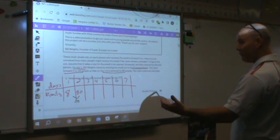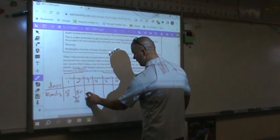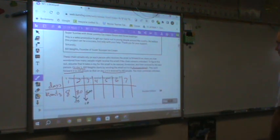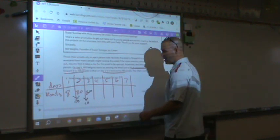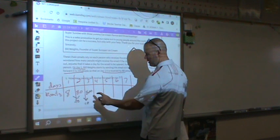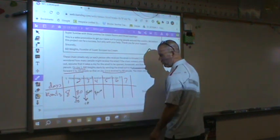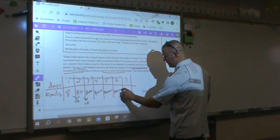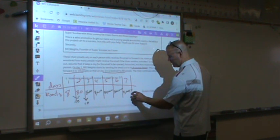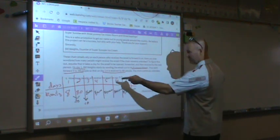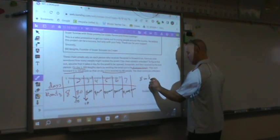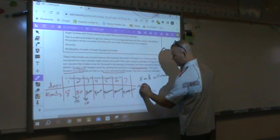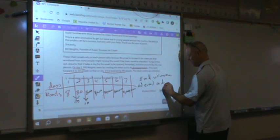So those 80 people are going to send it to 10 of their friends, which is another 800 people. Eight to 80 to 800 to 8,000 on day four to 80,000 on day five to 800,000 on day six to 8 million on day seven. So how many people will receive the email on day seven? 8 million will receive an email on day seven.